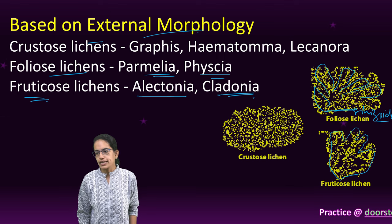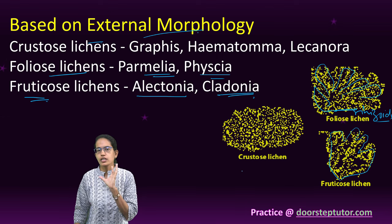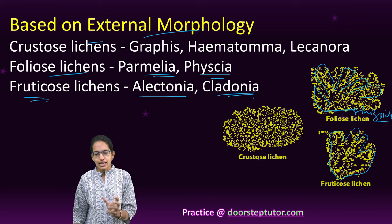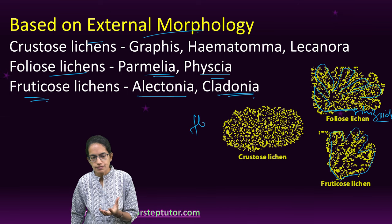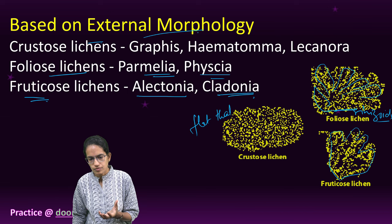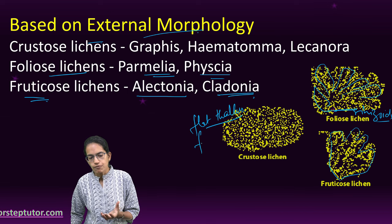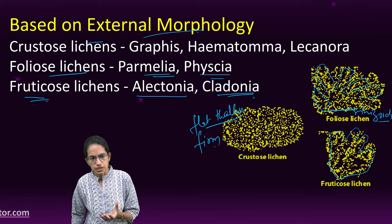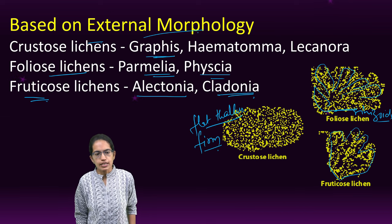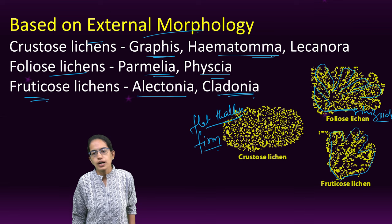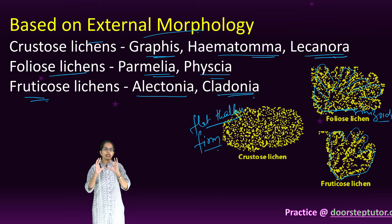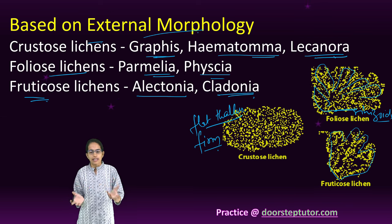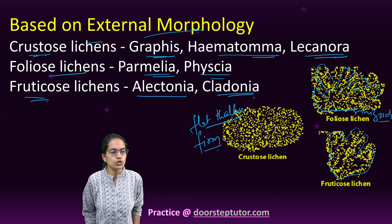Crustose lichen is a lichen which is not conspicuous. It is thin, has a flat thallus, and a firm texture. The examples are Graphis, Haematoma, and Lecanora. It also has a structure that gives the appearance of a crust, and therefore it is known as a crustose lichen.